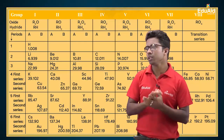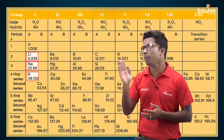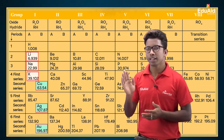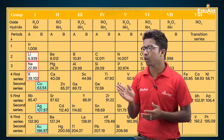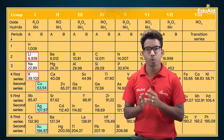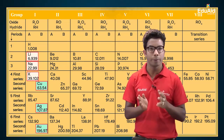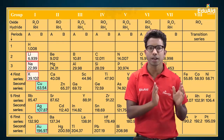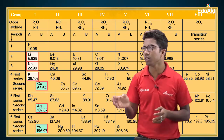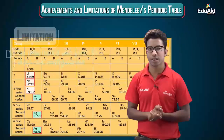For example, in Mendeleev's periodic table, in the first group, along with lithium, sodium, and potassium, copper, silver, and gold are also placed. But copper, silver, and gold are not similar to lithium, sodium, and potassium. In the modern periodic table, copper, silver, and gold are placed in a different group. This is one of the limitations of Mendeleev's periodic table.